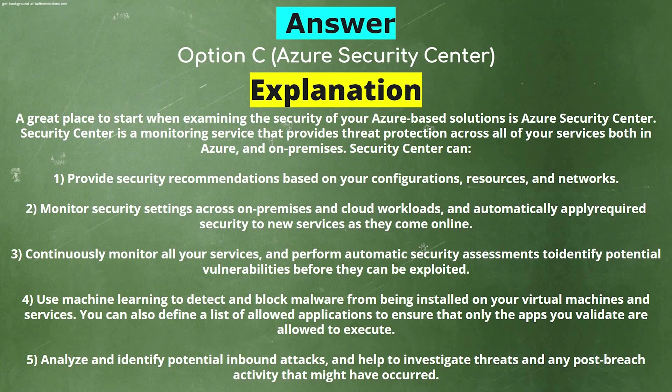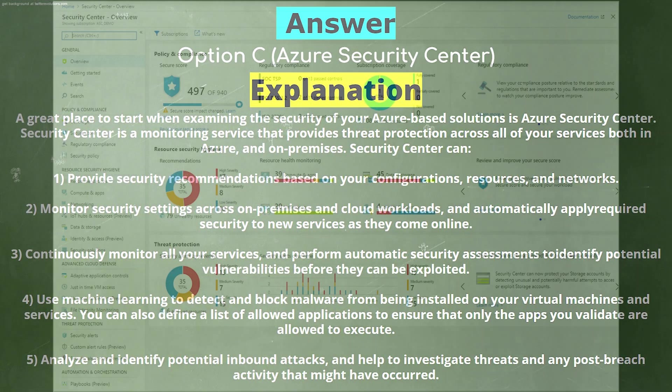Number four: use machine learning to detect and block malware from being installed on your virtual machines and services. You can also define a list of allowed applications to ensure that only the apps you validate are allowed to execute. Number five: analyze and identify potential inbound attacks and help investigate threats and any post-breach activity that might have occurred.